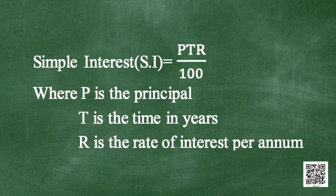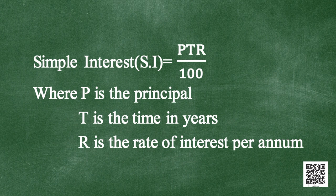We had also seen how to find simple interest. To find simple interest, we use: Simple Interest = PTR divided by 100, where P is the principal, T is the time in years, and R is the rate of interest per annum.